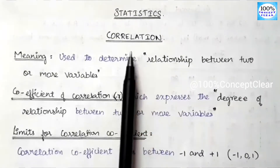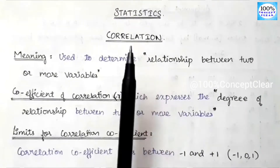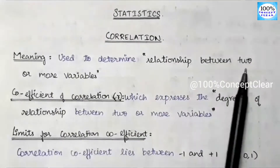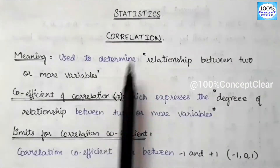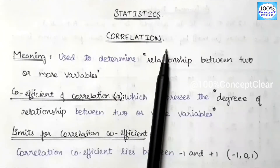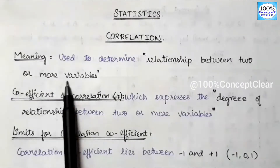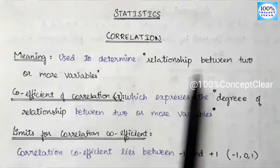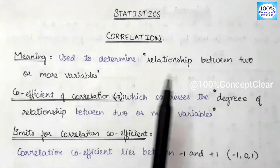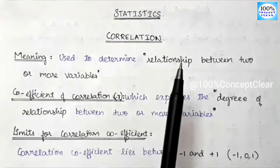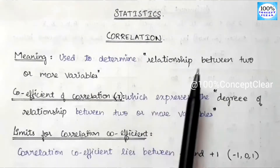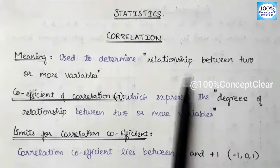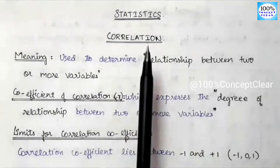Now let's talk about the correlation and its basic information. First, let's look at the meaning. Correlation is used to determine the relationship between two or more variables. If there are two variables, the relationship between them is examined — if one increases, the other increases, or if one decreases, the other decreases.